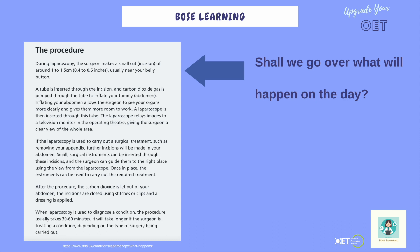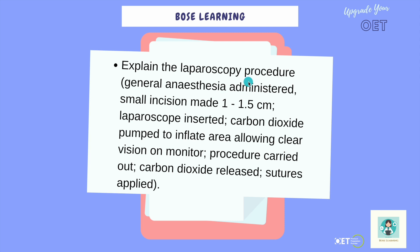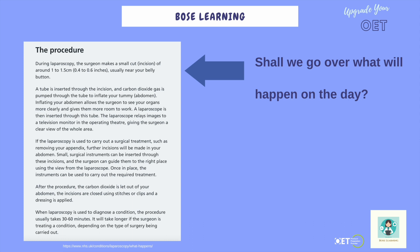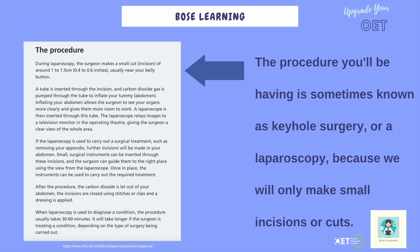So how do you begin? It's a good idea to always encourage the patient to contribute, to involve them, rather than just saying 'okay let's go through it.' Invite them — use lovely polite language, encourage their response. For example: 'Shall we go over what will happen on the day?' The task card may well just say 'explain the procedure,' but in order to score well in the OET and to build that rapport, invite their opinion. The procedure you'll be having is sometimes known as keyhole surgery — so introduce the topic. You don't have to do it exactly like this, but introduce it.